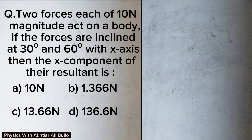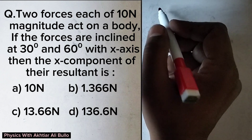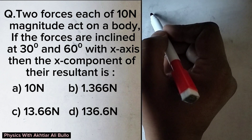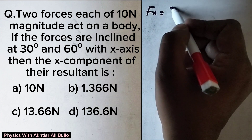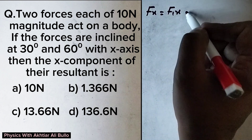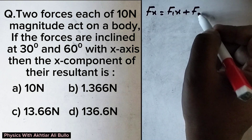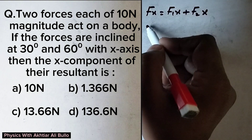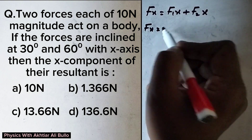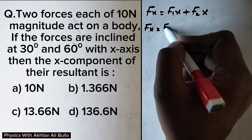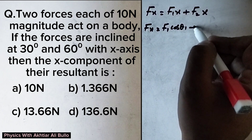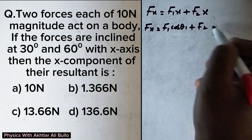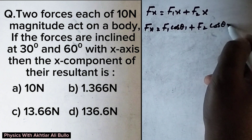The horizontal component is calculated using the formula: Fx is equal to F1x plus F2x, so Fx will be equal to F1·cosθ1 plus F2·cosθ2.